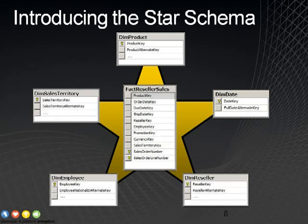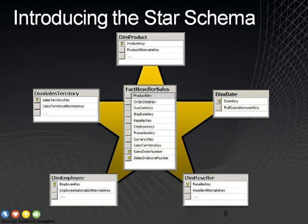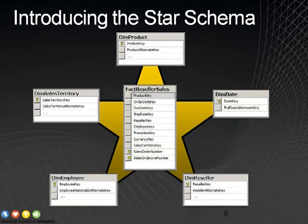What makes this a star schema is the fact that we have these foreign key relationships that join to a variety of dimension tables. You may have more or less than the number of dimensions that you see here, but this example is provided to help you use a little imagination to see a star spring out of this structure. Typically in our star schema structure, the fact table has a single join from a column in the fact table to a single dimension table. So here we have product, date, reseller, employee, and sales territory as five different dimensions, giving us five joins established for this particular fact table.